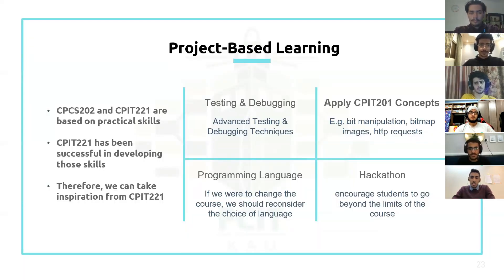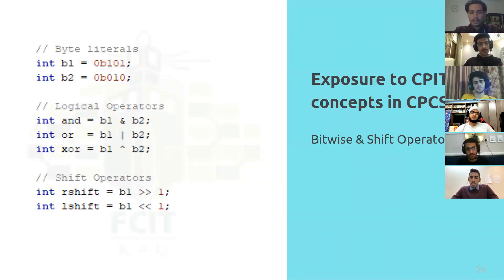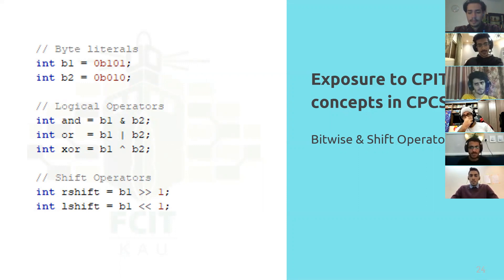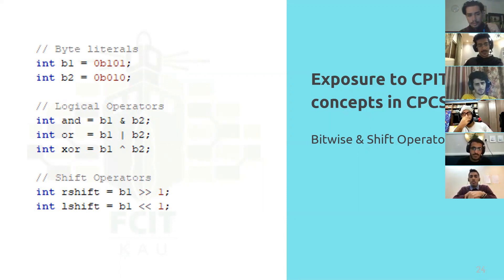After that, we would like to apply CPIT221 concepts in programming. For example, we would implement bit manipulation. This would reinforce the information students receive from the other course and make the learning process more interactive and fun. Students learn a lot of things that are applicable in theory, but this would allow them to identify how to take something learned in theory and apply it in a practical setting.